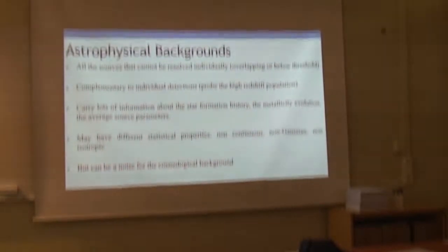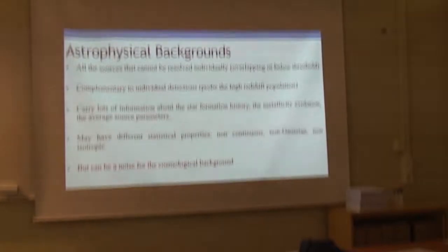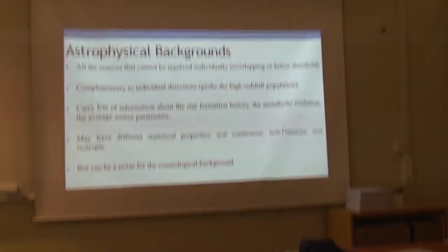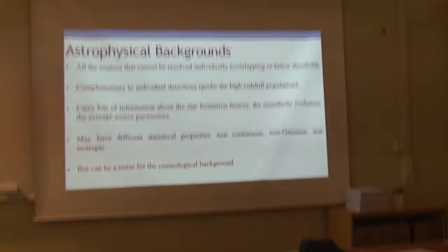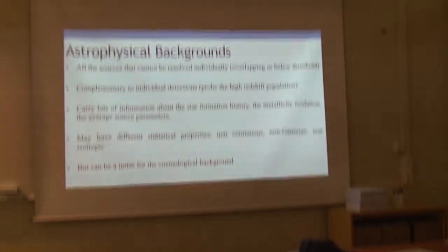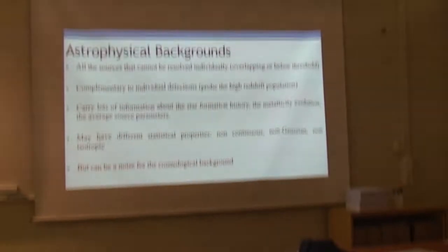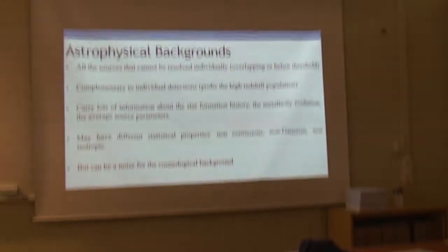There is another background that is also important: the astrophysical background. It is not formed in the very early stages of the universe, so there are no constraints on it from CMB observations — it was formed after. It is created by all the astrophysical sources since the beginning of stellar activity.